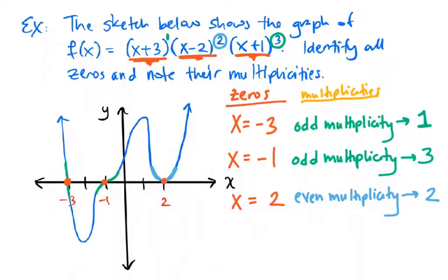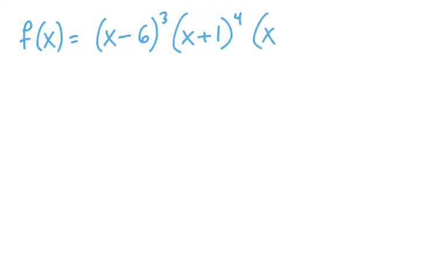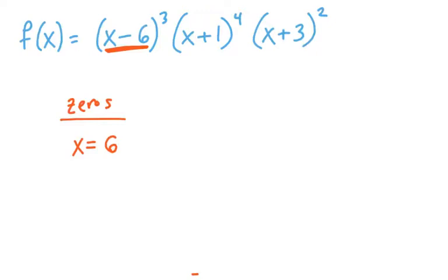Hopefully that starts connecting the equation of the function with the graph. Maybe one more example to clarify — I can give you just a function, and that would be sufficient to tell the zeros and the multiplicities. Let's say we have x minus six to the power of three, times x plus one to the power of four, times x plus three squared. Let's make a chart of the zeros and their associated multiplicities. The zeros come from setting each factor equal to zero: x minus six equals zero gives x equals positive six; x plus one equals zero gives x equals negative one; x plus three equals zero gives x equals negative three.